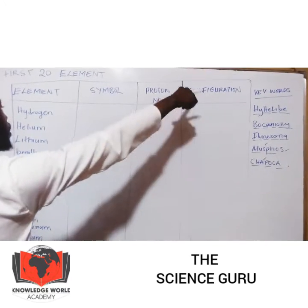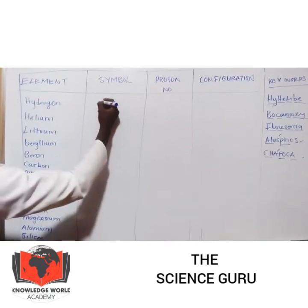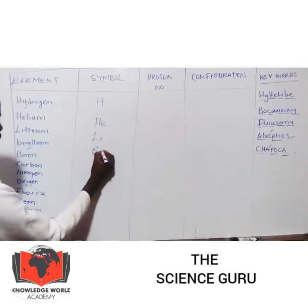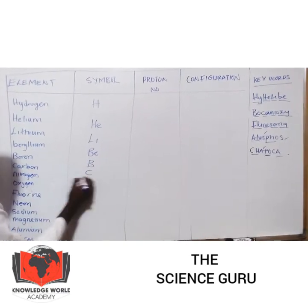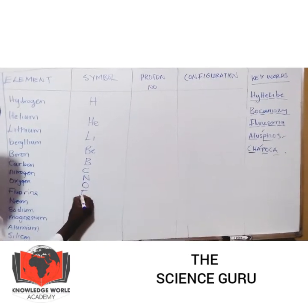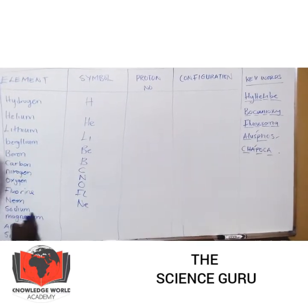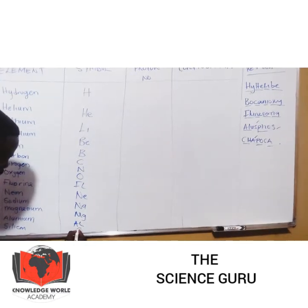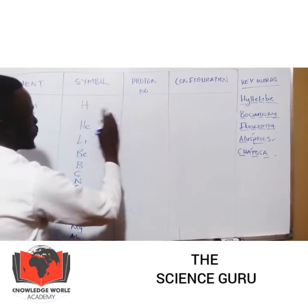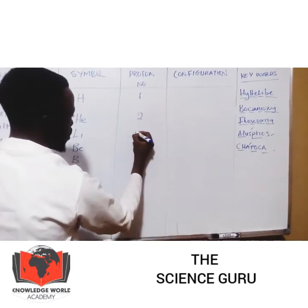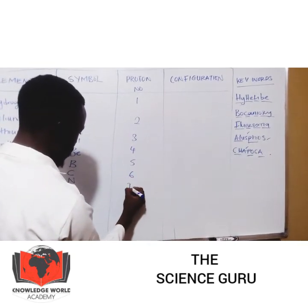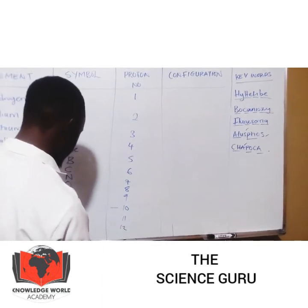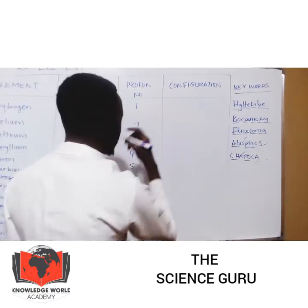The element is hydrogen, symbol H. Helium, symbol He. Lithium, beryllium, boron, carbon C, nitrogen N, oxygen, neon Ne, sodium Na, magnesium Mg, then aluminum, that's silicon with S. The proton numbers: hydrogen is 1, helium 2, lithium 3, beryllium 4, boron 5, carbon 6, nitrogen 7, oxygen 8, fluorine 9, neon 10, sodium 11, magnesium 12, aluminum 13, silicon 14.